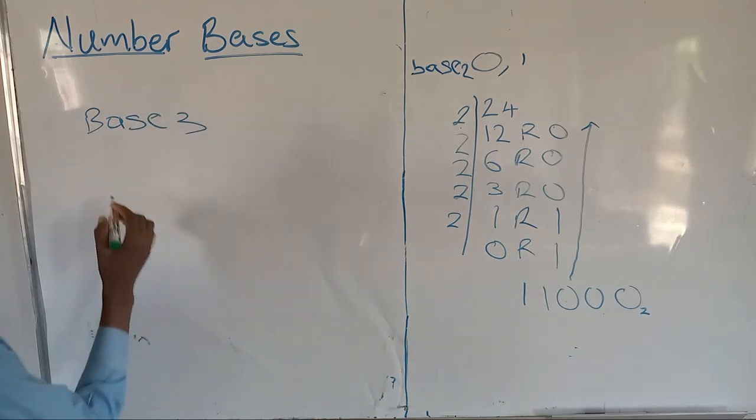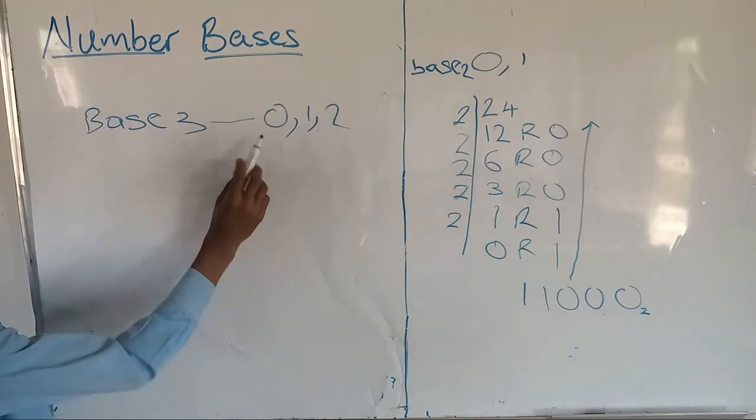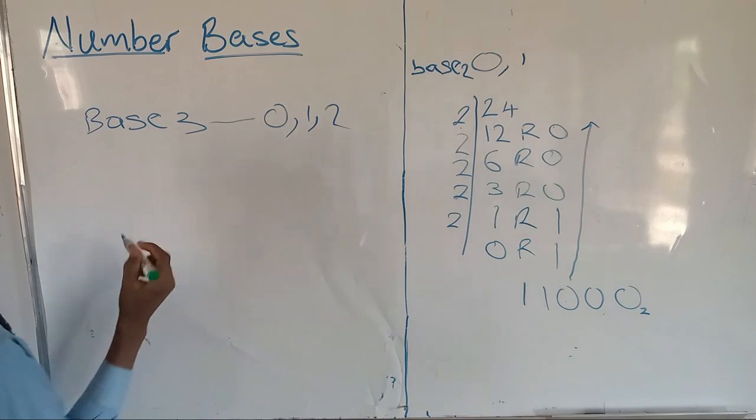In base three, what occurs is zero, one, and two. So these are the numbers you will be expecting to see.